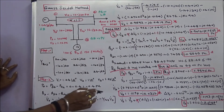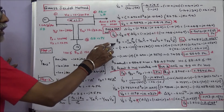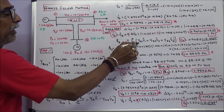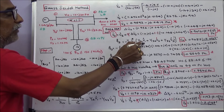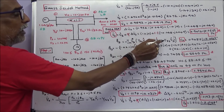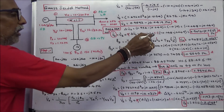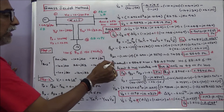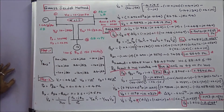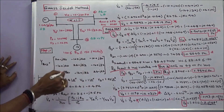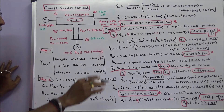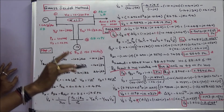Next we calculate V3. To calculate V3, we first need Q3. Q3 is the negative imaginary part of V3* × (Y31·V1_initial + Y32·V2_accelerated + Y33·V3_initial). Substituting all values, Q3 = 0.8845 per unit. The reactive power limit is Q3_min = 1 and Q3_max = 1.5 per unit — the limit is not violated. Hence Bus 3 remains a generator bus or PV bus.